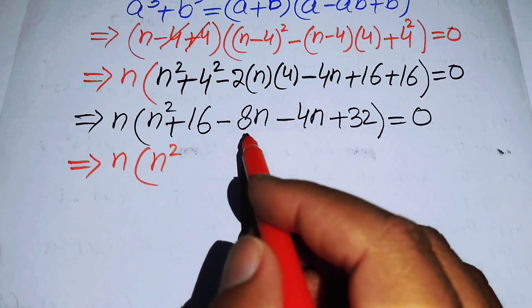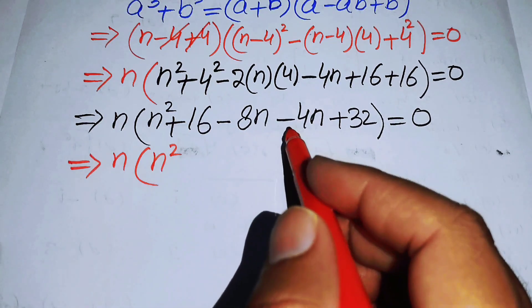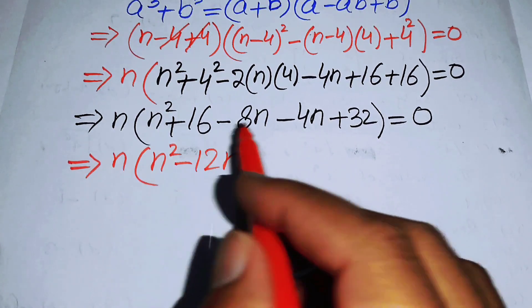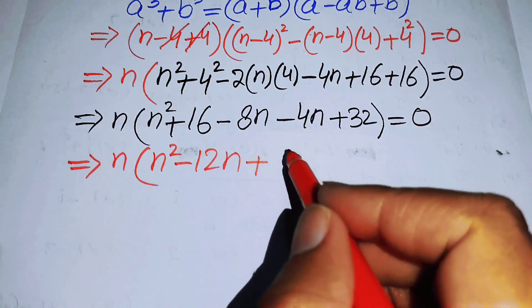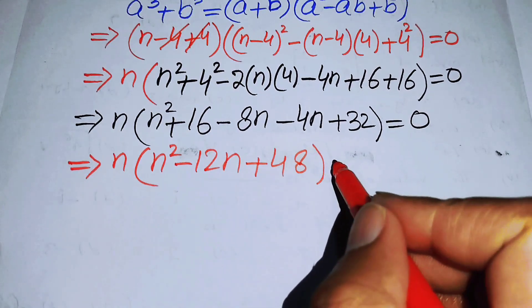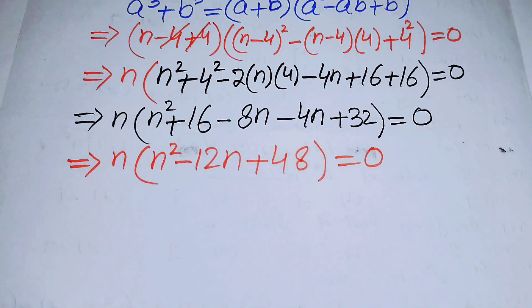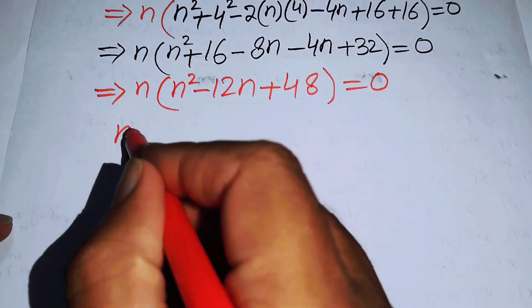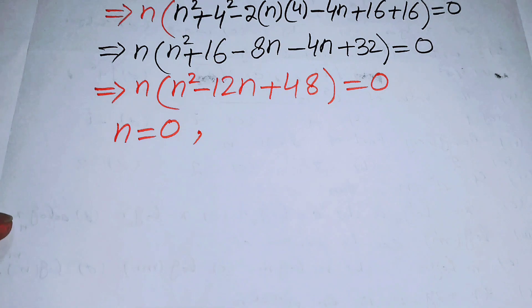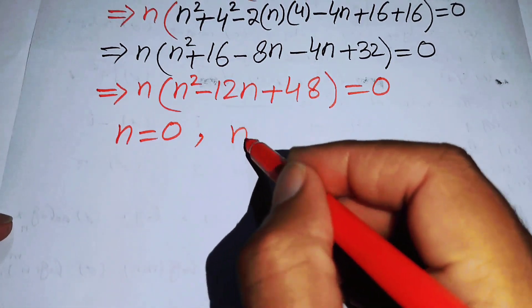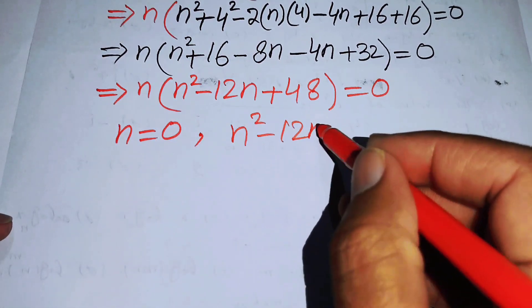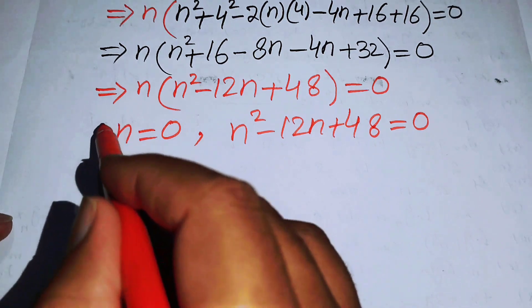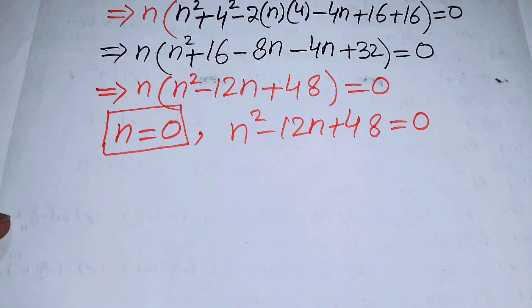Combining like terms: n² with coefficient 1, -8n - 4n = -12n, and 16 + 32 = 48. So we have n(n² - 12n + 48) = 0. This gives us two cases: the first root is n = 0, and the second case is n² - 12n + 48 = 0.